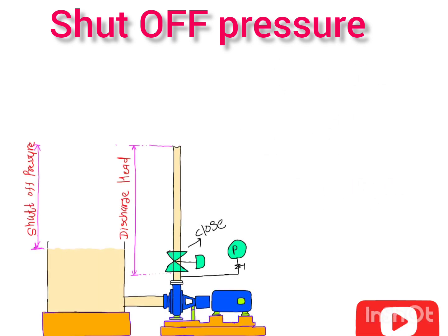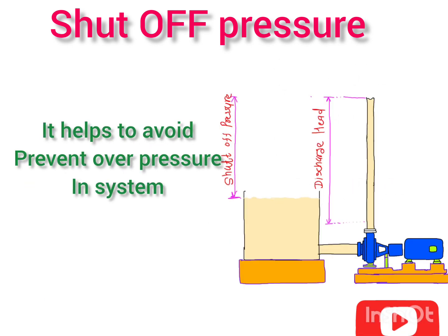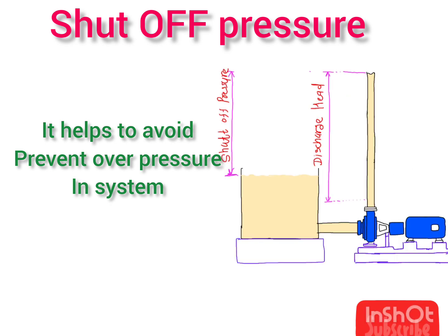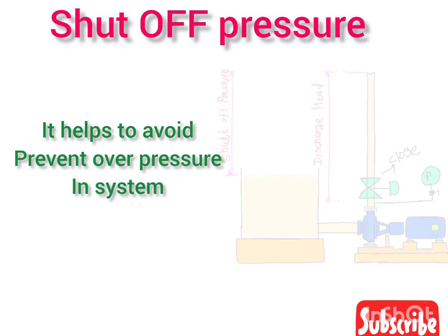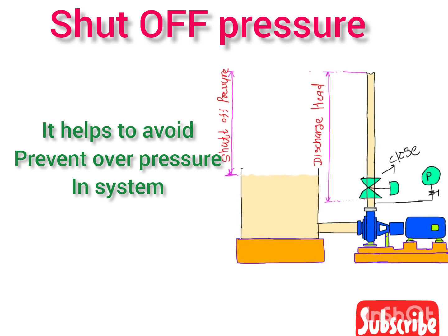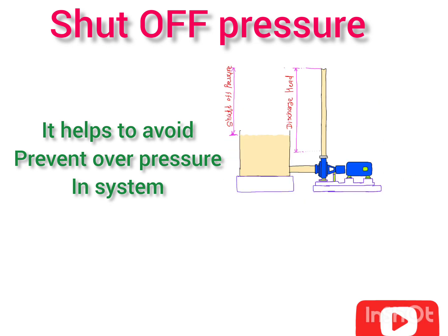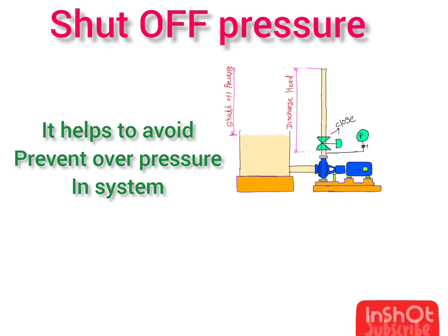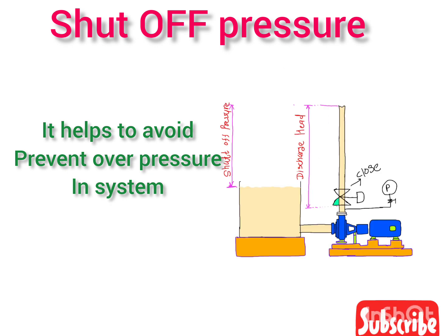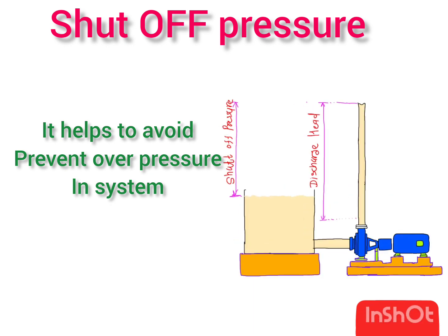The second benefit is that if you know the shut-off pressure, you can prevent overpressure in the system. For example, if you want 2 kg pressure in your system and you select a pump with a 2 kg shut-off pressure, then your system will not go beyond 2 kg pressure. So it helps you prevent overpressure in the system.